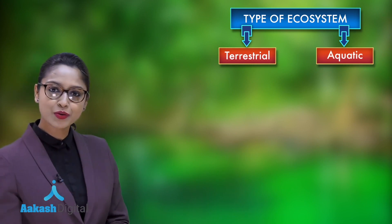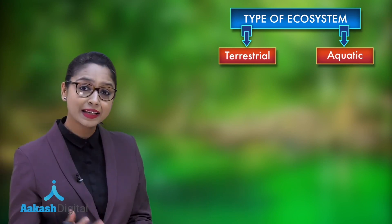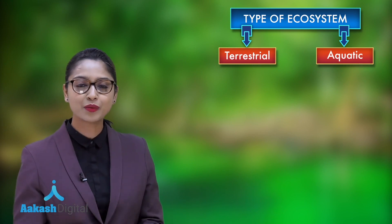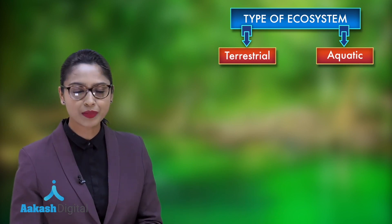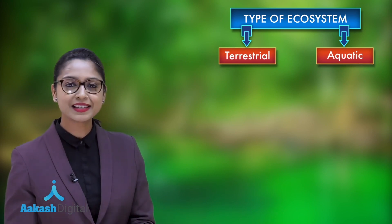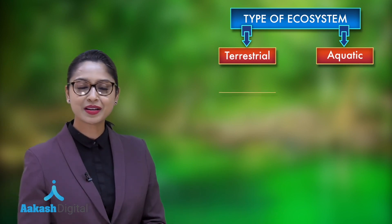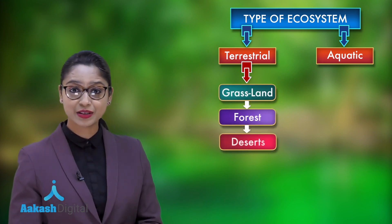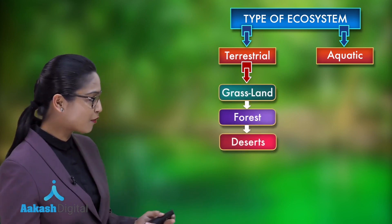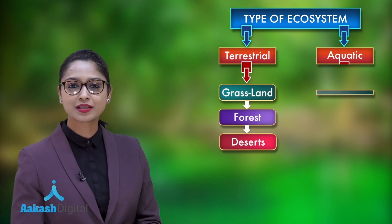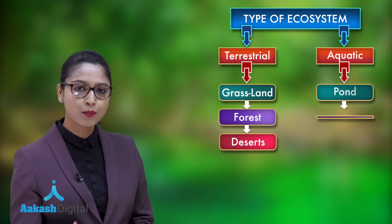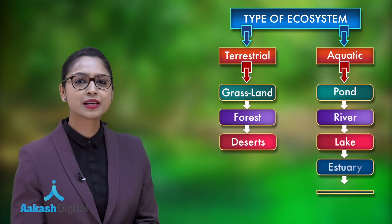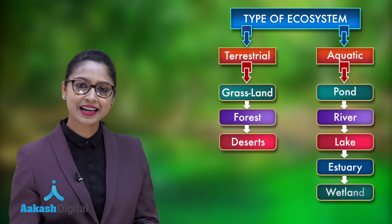Terrestrial means present on land, and aquatic means found inside water. Some examples of terrestrial ecosystem are grassland, forest, and desert. Some examples of aquatic ecosystem include pond, river, lake, fisheries, wetlands, etc.